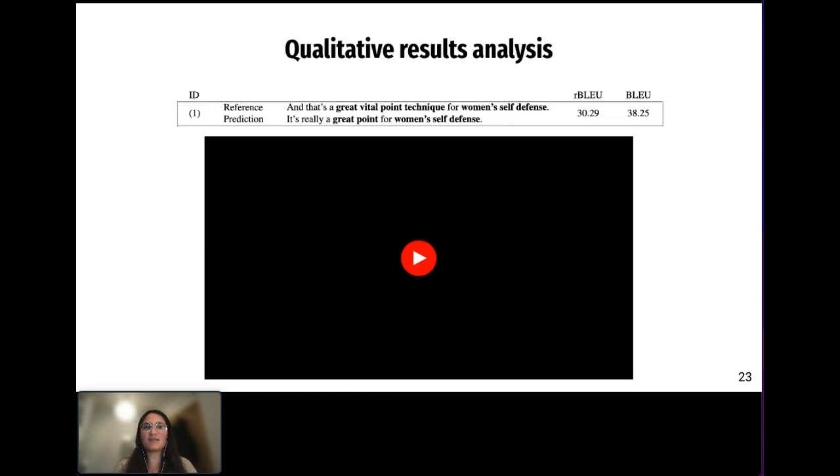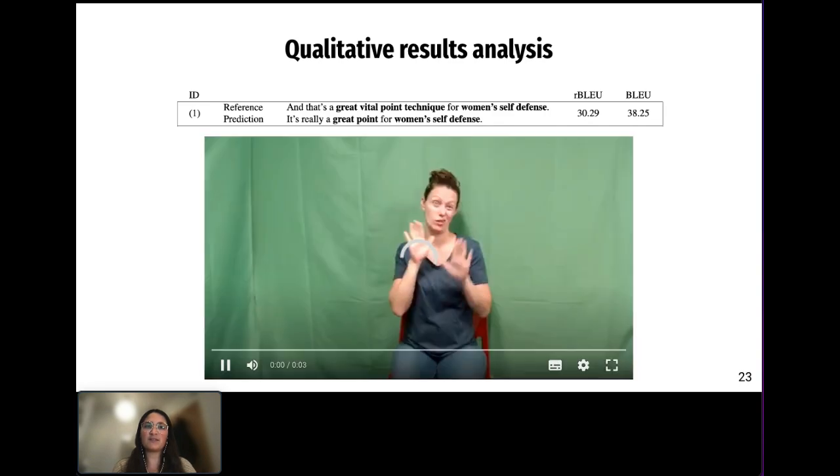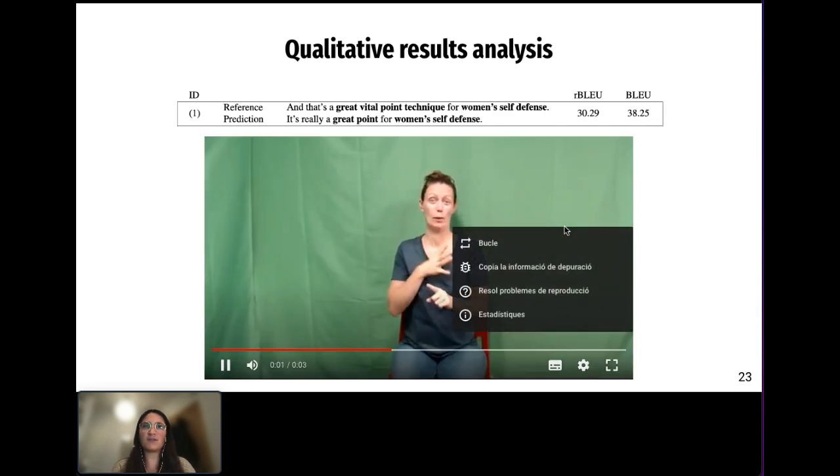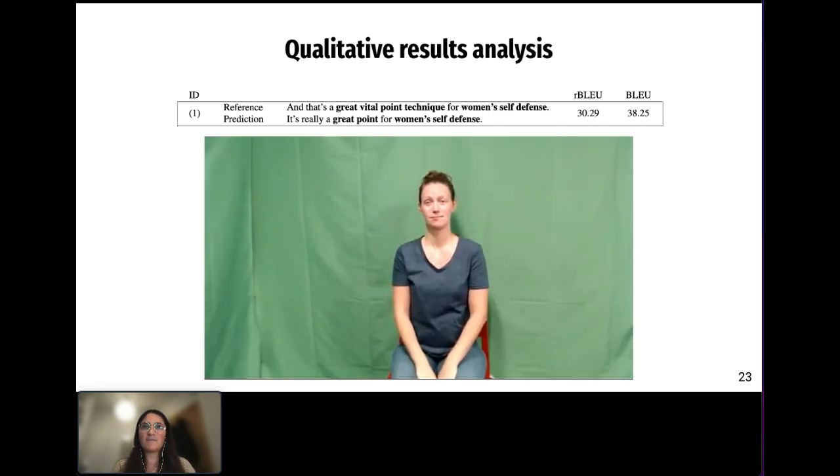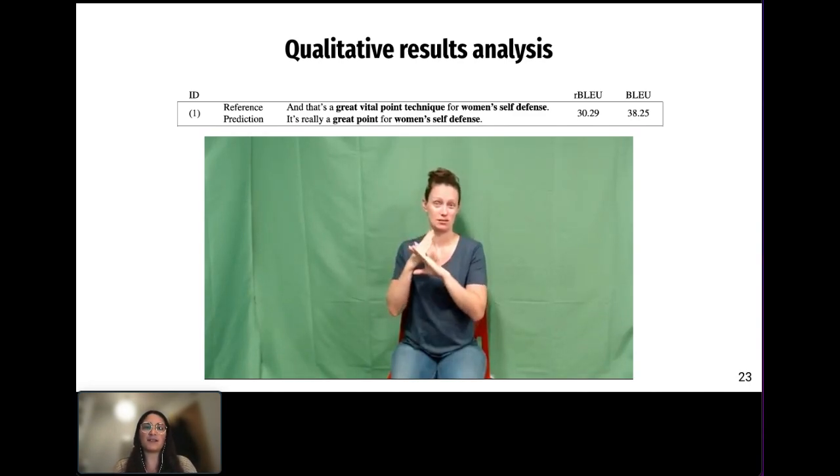In this slide, we can see the reference, prediction, and input video of this particular test sentence. In bold, you can see words kept to compute the reduced BLEU metric. This particular example demonstrates the ability of our model to provide detailed translations, even for complex words such as woman's self-defense. Both our metrics are high for this example.